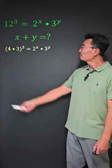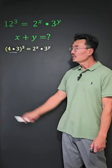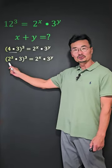Like this. First, 12 is 4 times 3, and then we'll change that 4 into 2 squared.